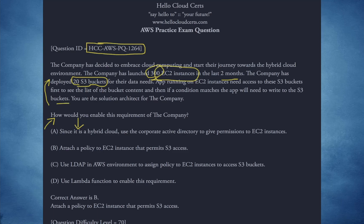So essentially, EC2 instances running in your environment need to write to an S3 bucket. How would you achieve that? You are the architect — the solution architect — how would you achieve that?